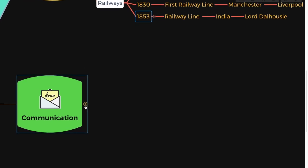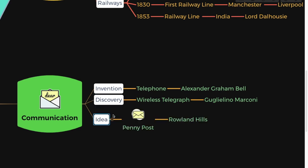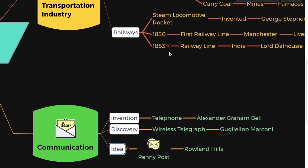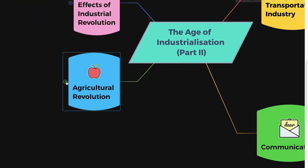Was the communication system improved during the Age of Industrialization? Yes. The invention of the telephone by Alexander Graham Bell improved communication. Then there was the discovery of wireless telegraph by Guglielmo Marconi, and the idea of penny post was brought forward by Rowland Hill.